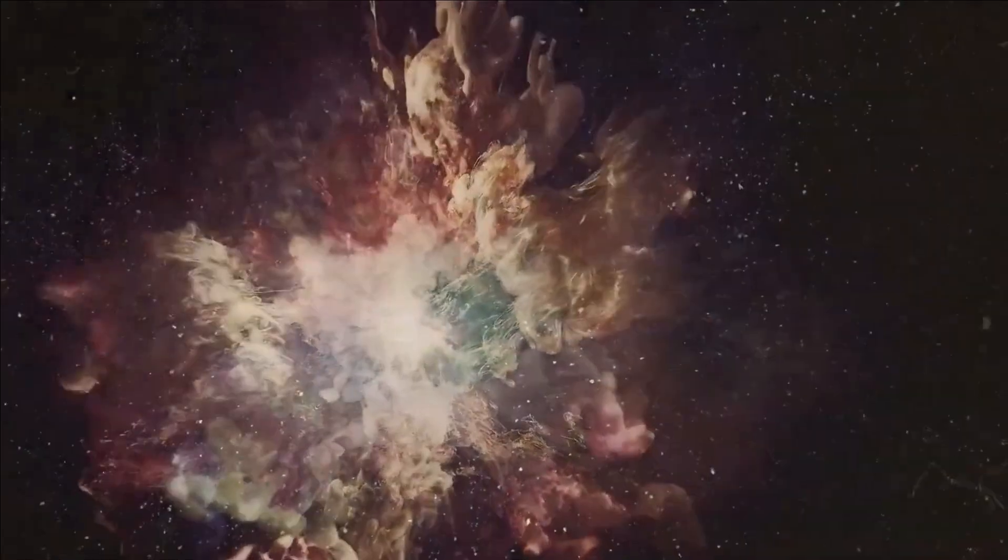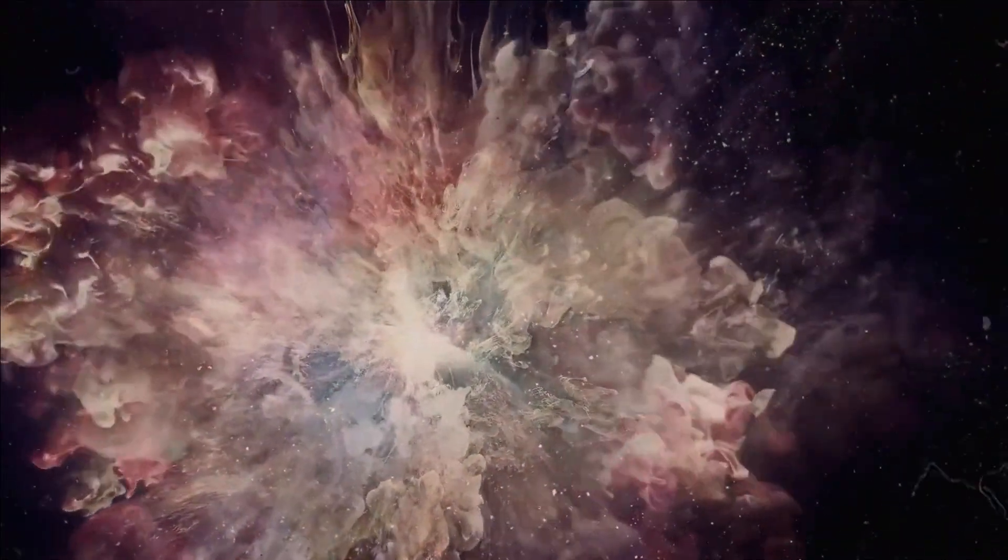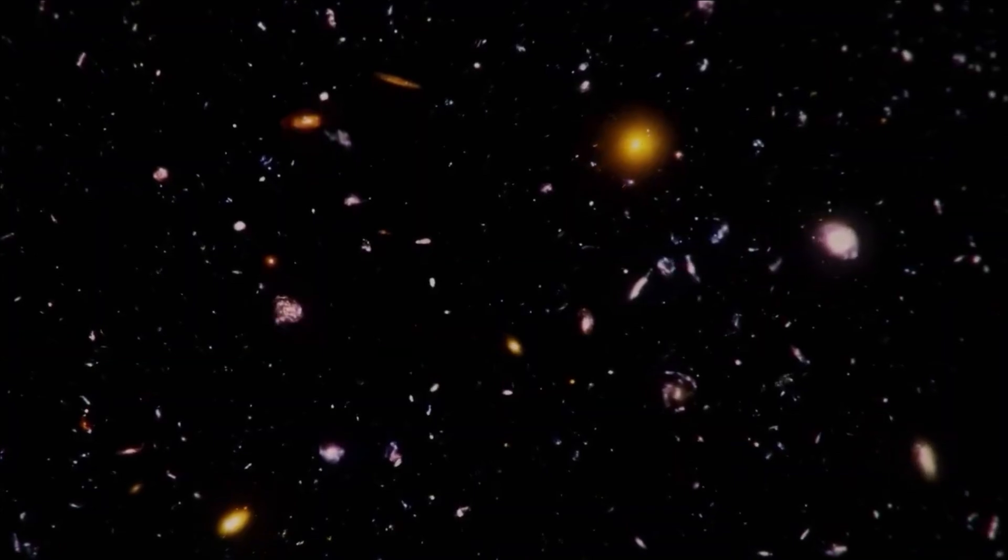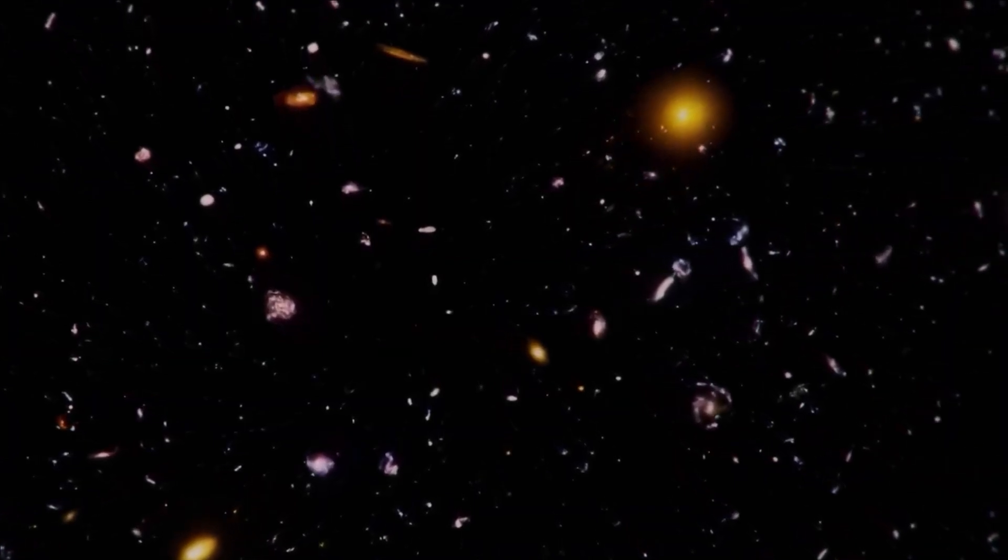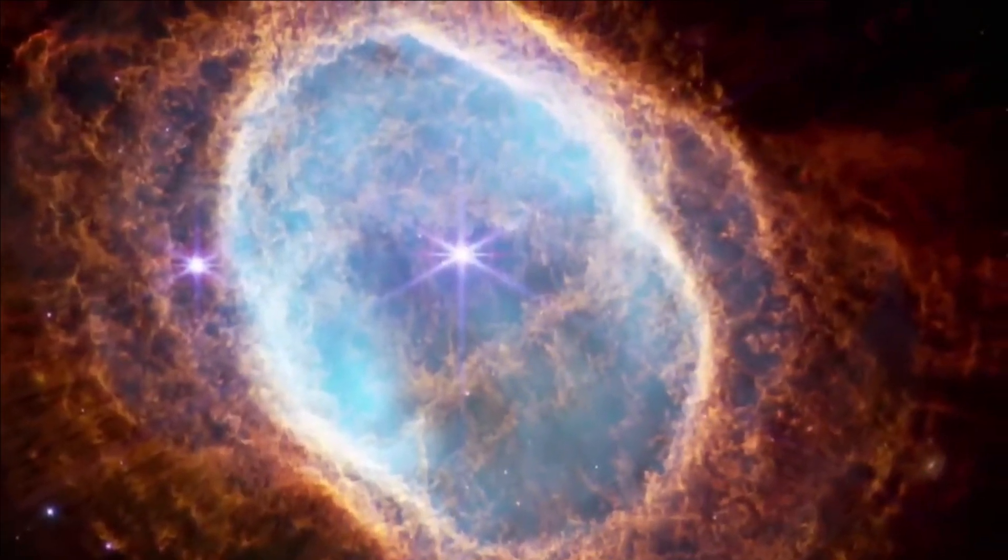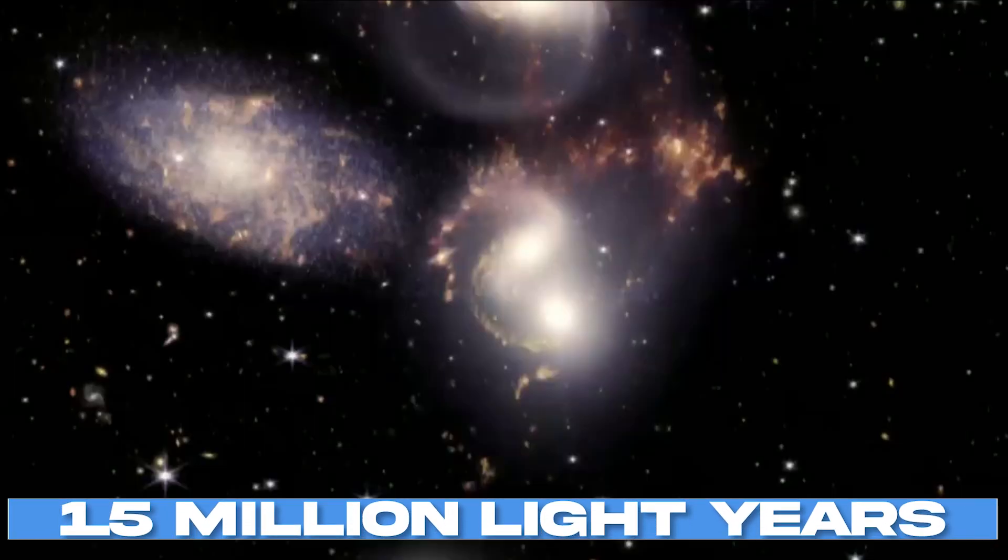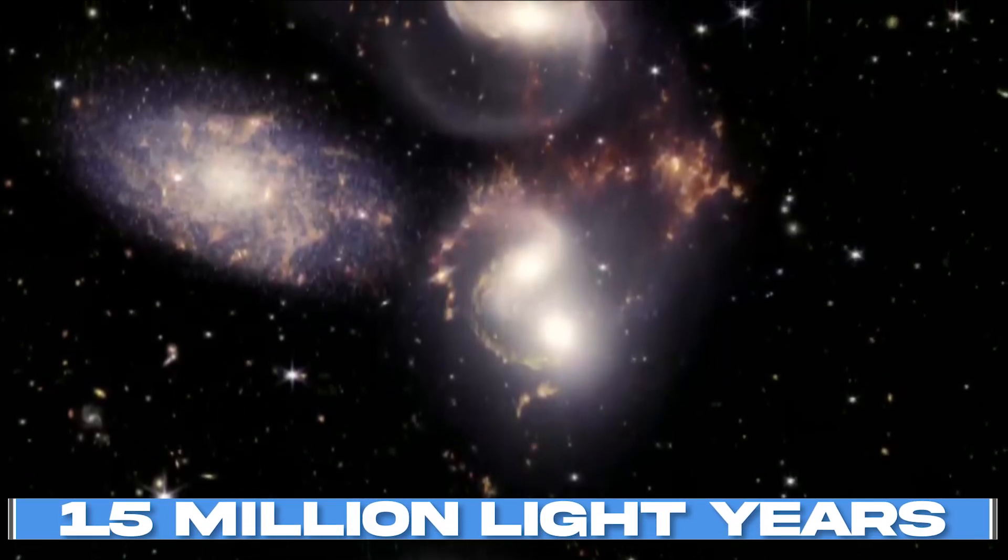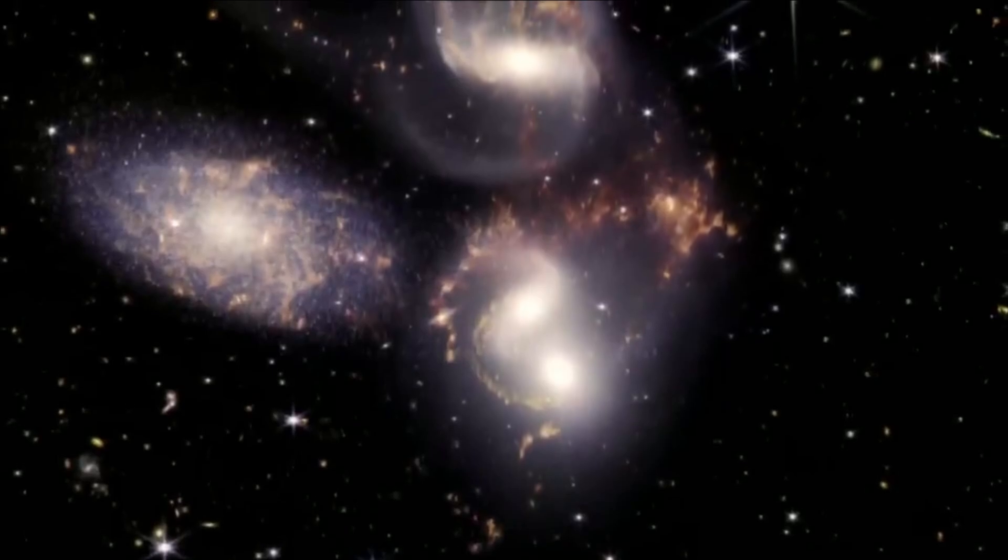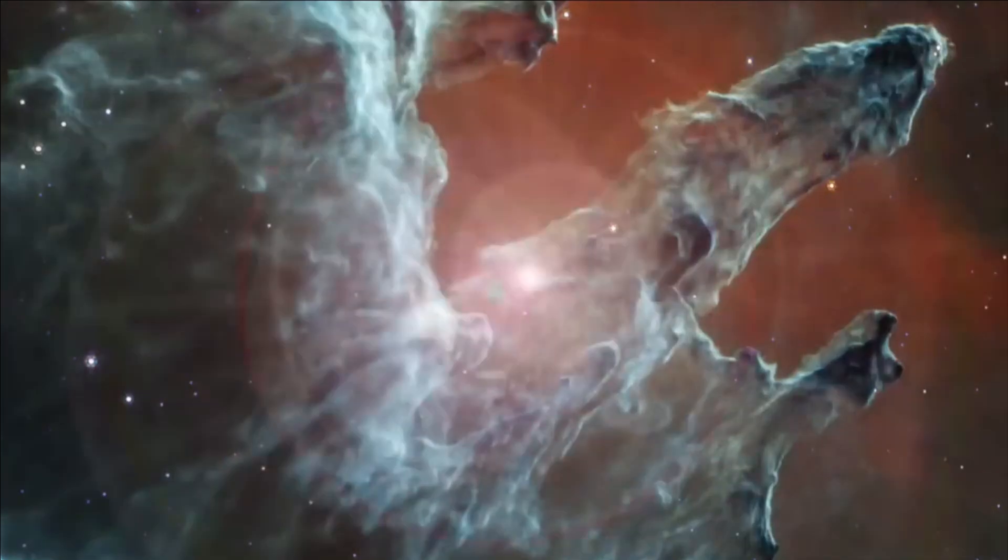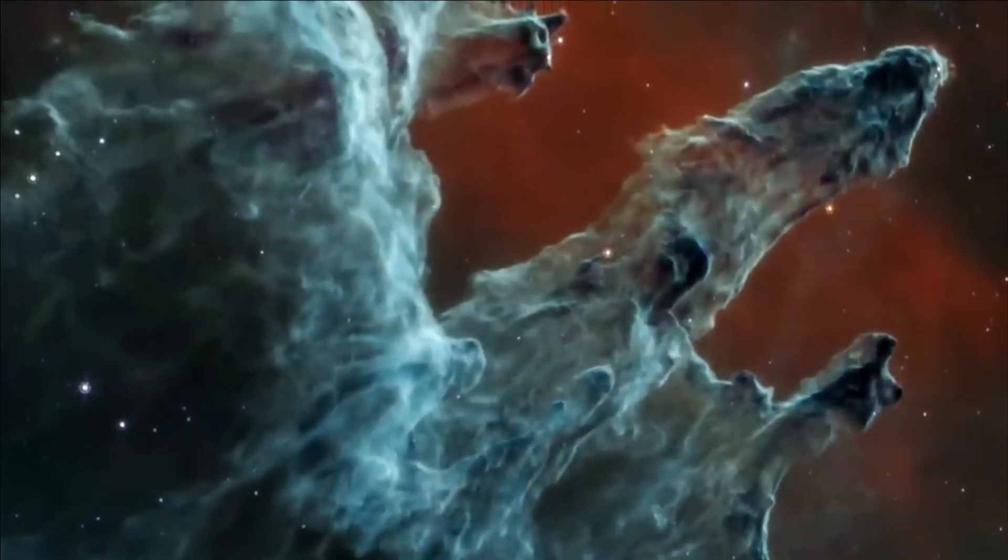NGC 6822, resonating in vibrant shades of green and gold, serves as a source of abundant clues about the early universe. Positioned a relatively close 1.5 million light-years away from Earth, this galaxy stands out for its notably low levels of metallicity, earning it the unique designation of being metal-poor.